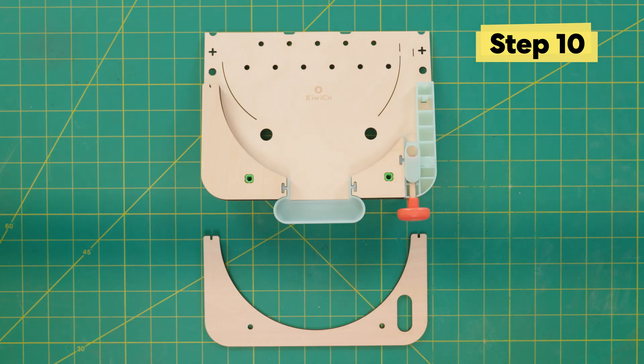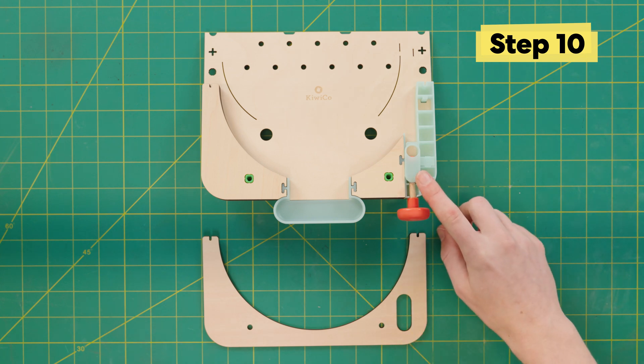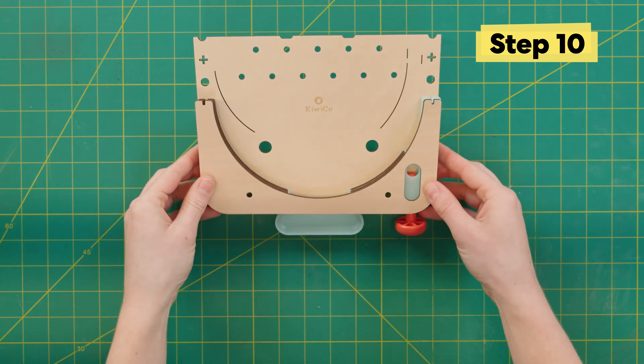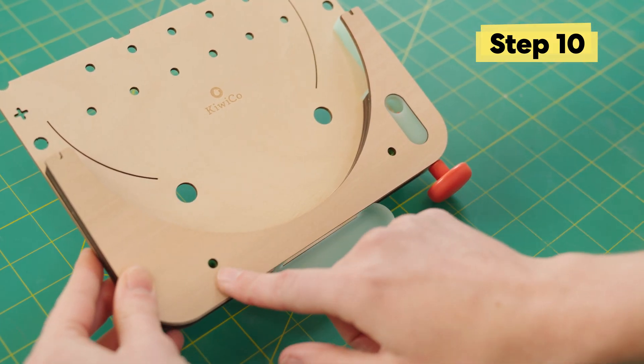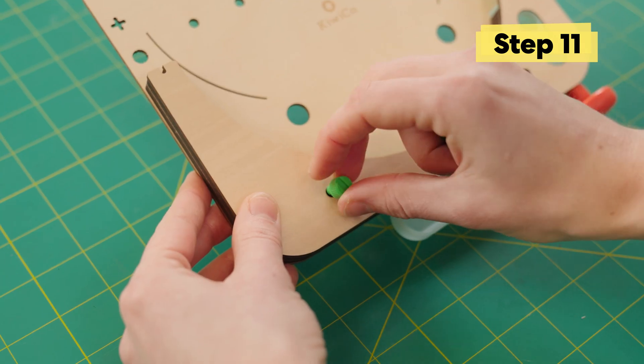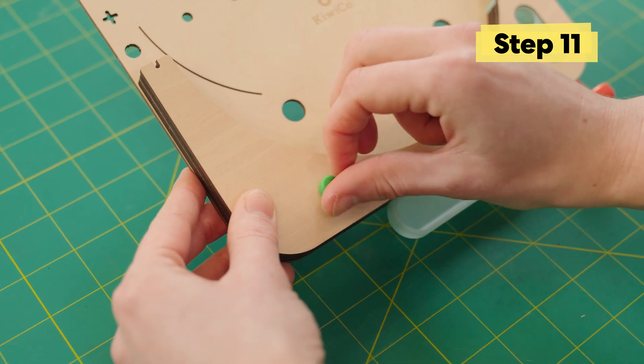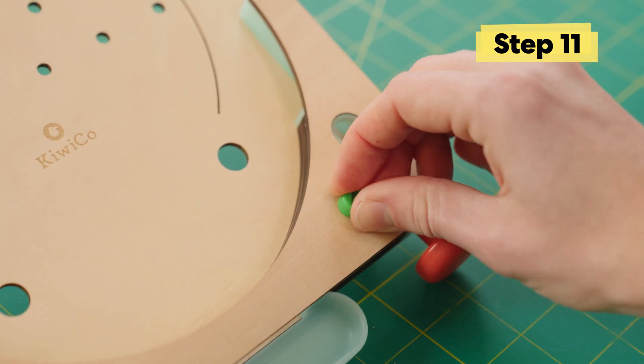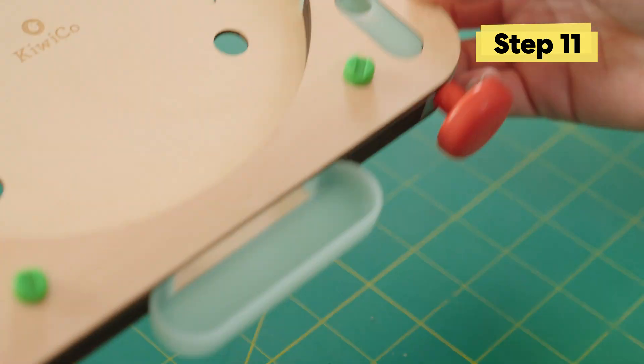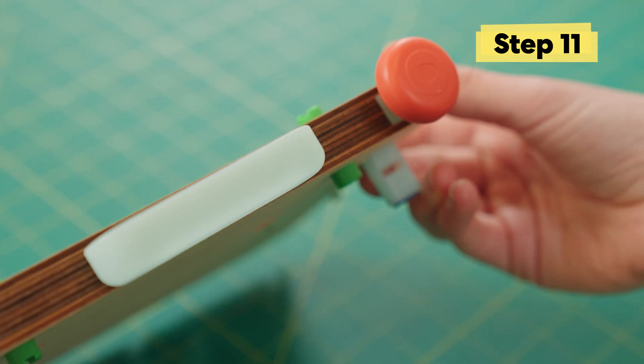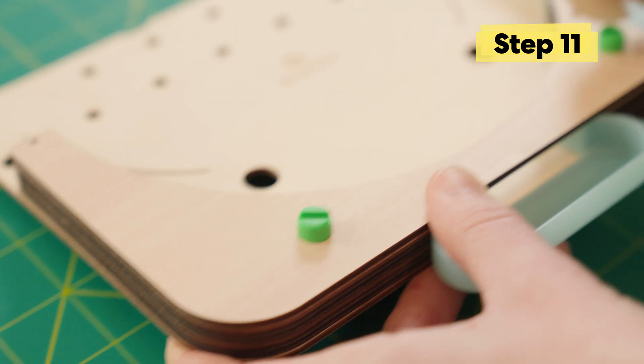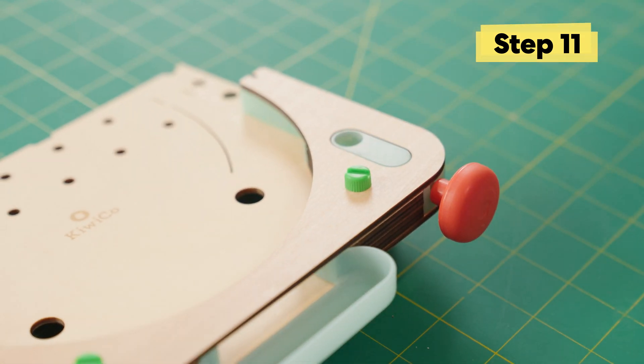The last layer of our sandwich is this nice faceplate. Make sure that these two small holes line up with the green standoffs. Then use two short green bolts to screw it into place. Everything should sit nice and flush and snug. If you want to tighten down your bolts, you can use any piece of 3mm wood or like a key or a coin from home.